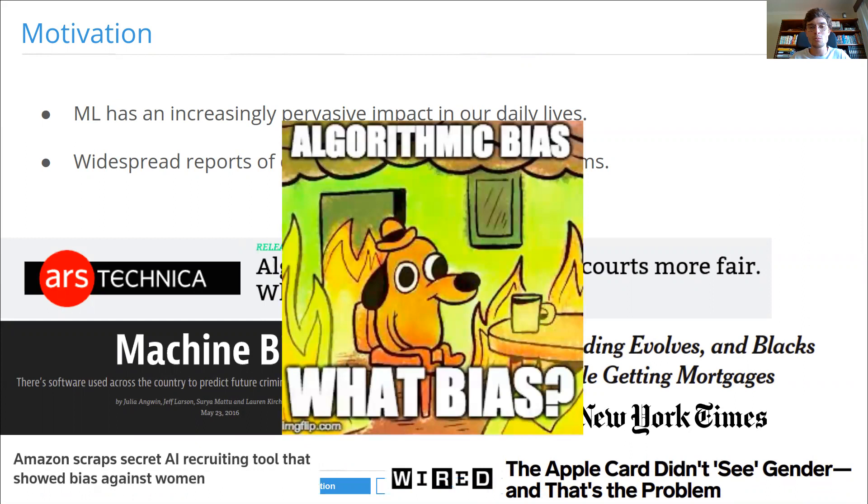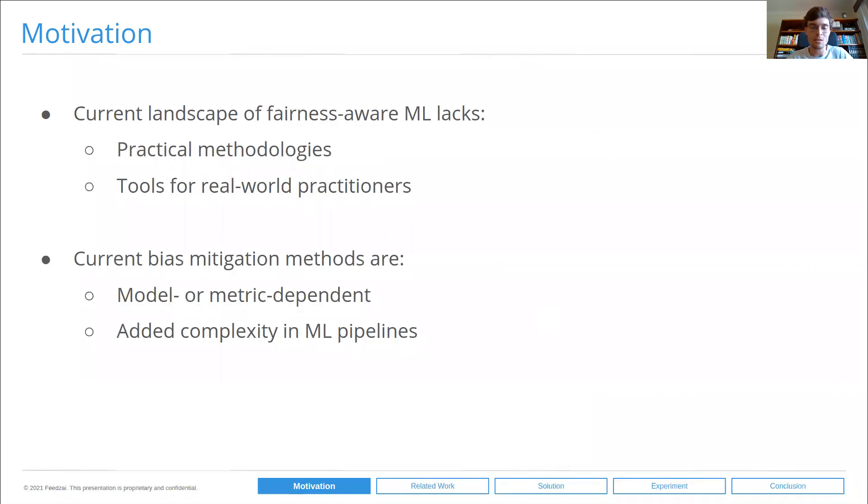There's a clear problem when blindly applying machine learning systems to some of these real-world domains. The literature is quite lacking in this behalf. The current landscape of fairness-aware ML still lacks practical methodologies and tools for real-world practitioners. Current bias mitigation methods are often model or metric dependent and invariably imply added complexity in machine learning pipelines, making it so they are seldom used in production live environments.